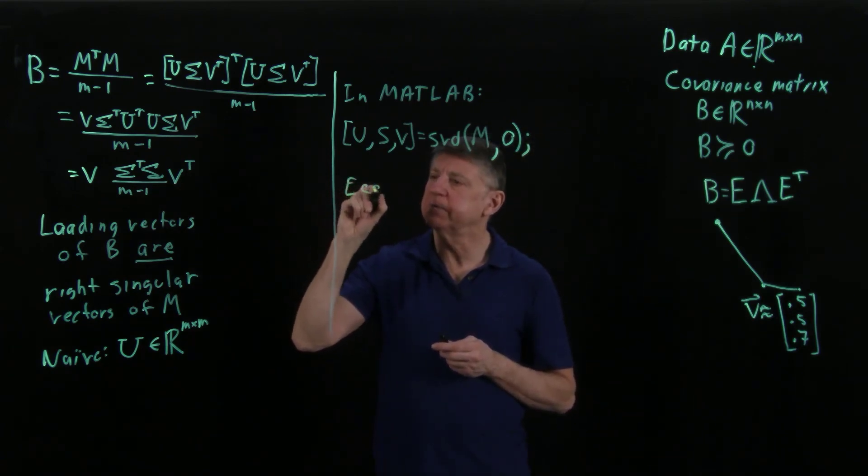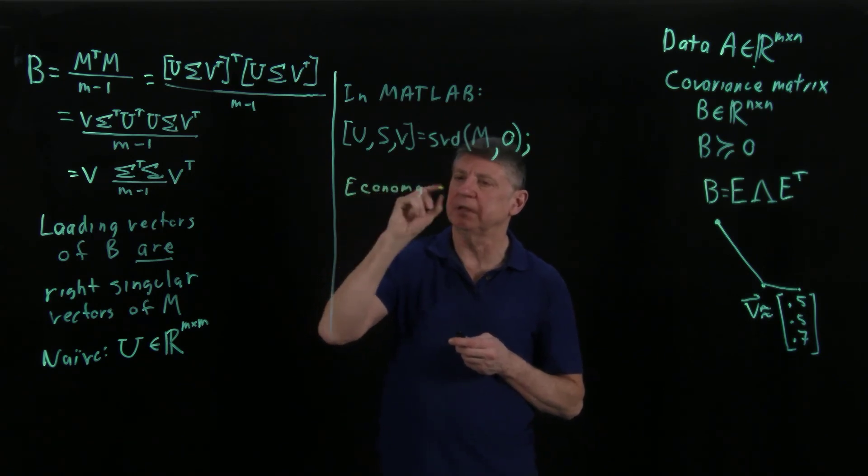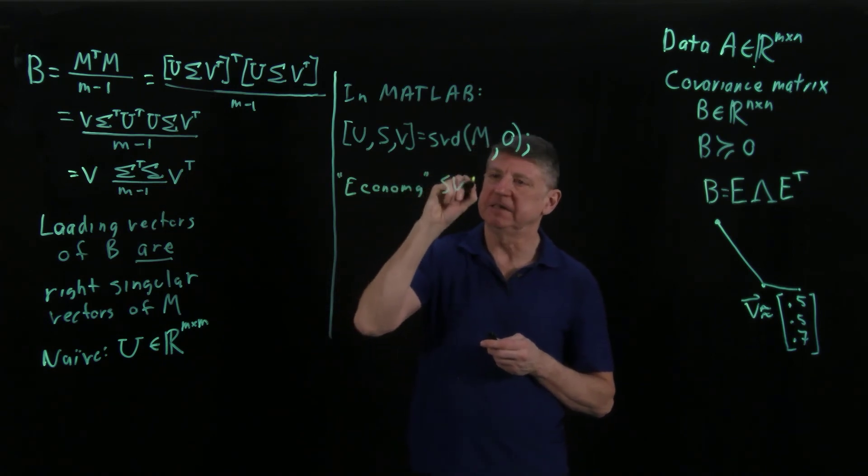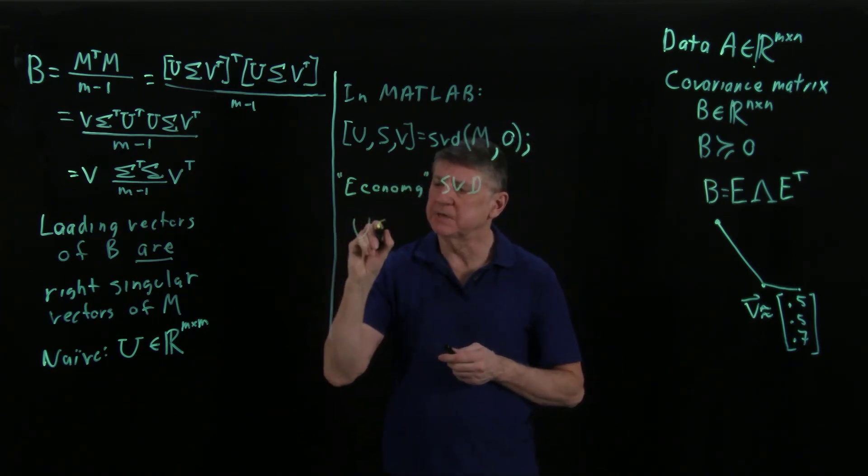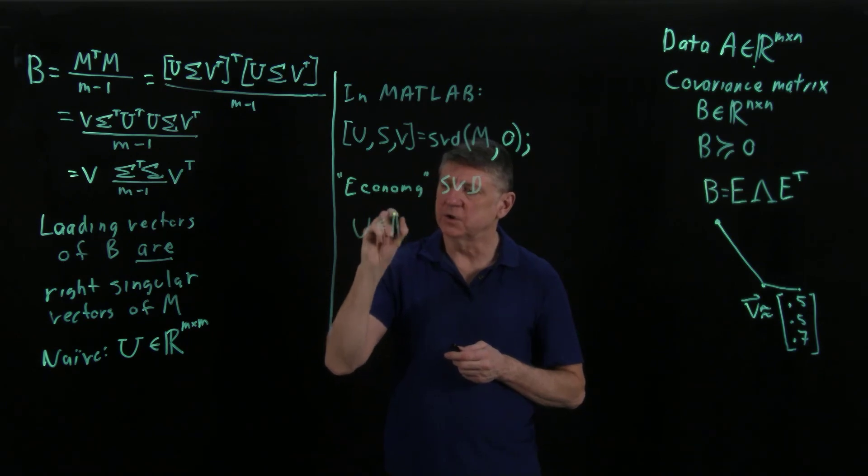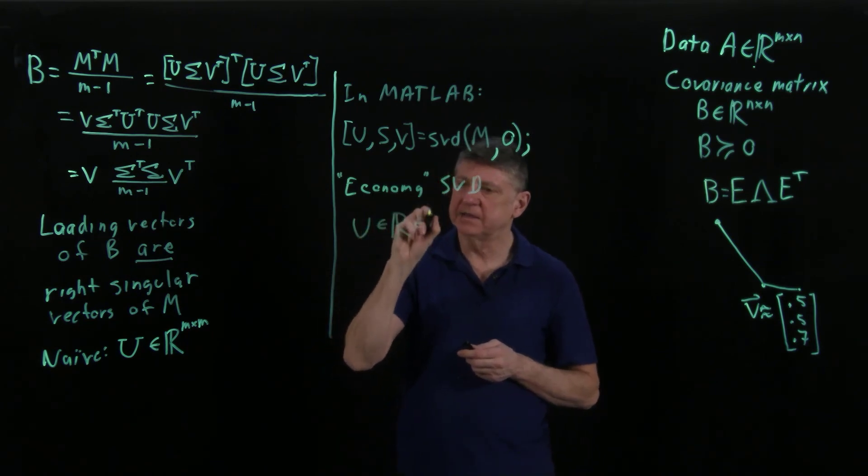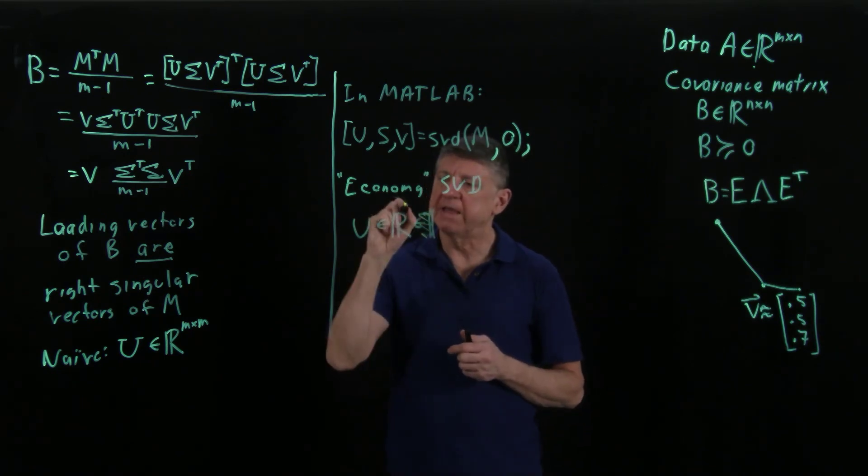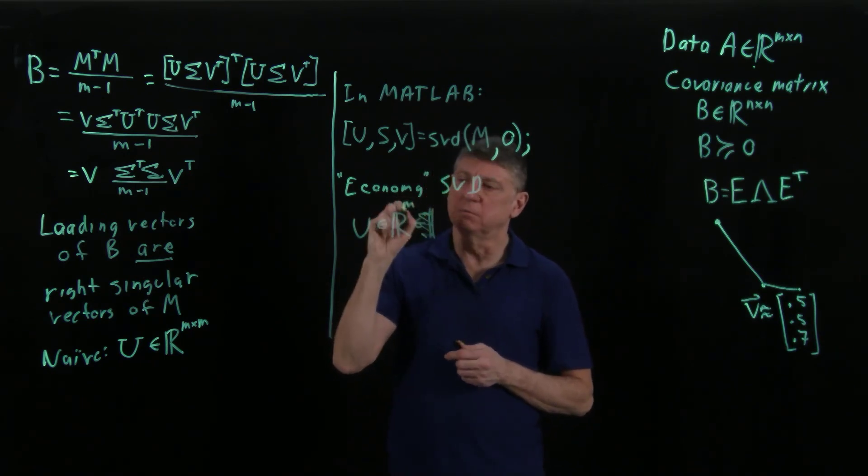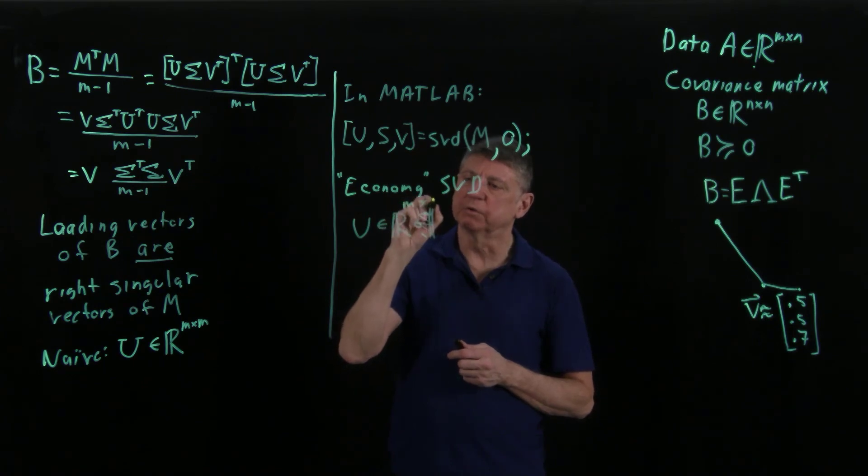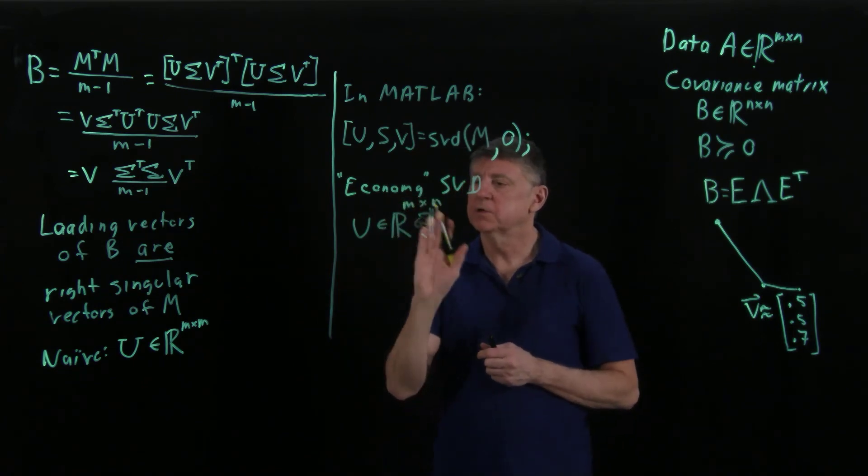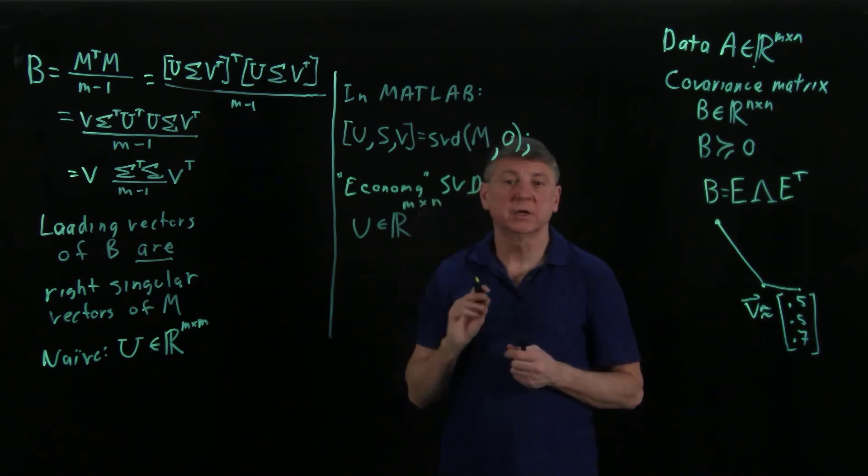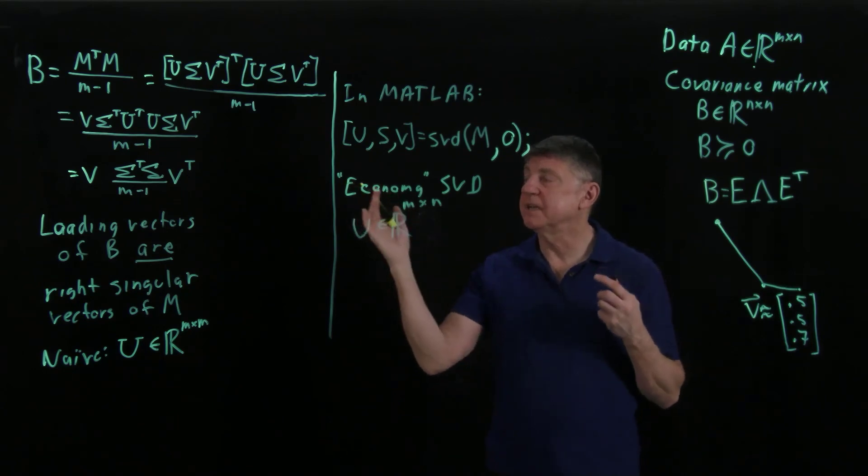And this is the, there are various names for this, this is sometimes called the economy SVD. And here, that matrix now is all real numbers, and it has, it's all real numbers, and there are M rows to it, and it will reduce it down to just N columns.